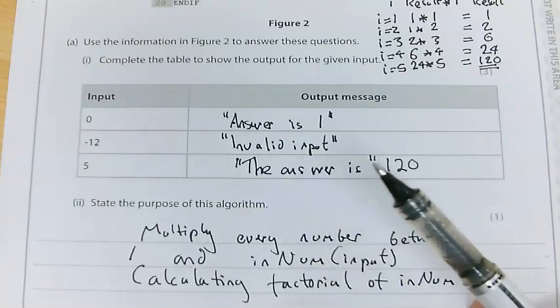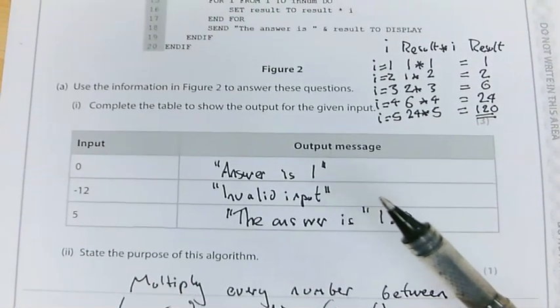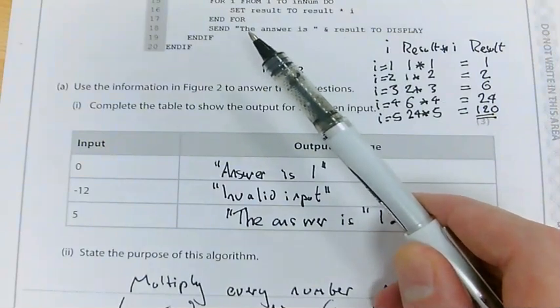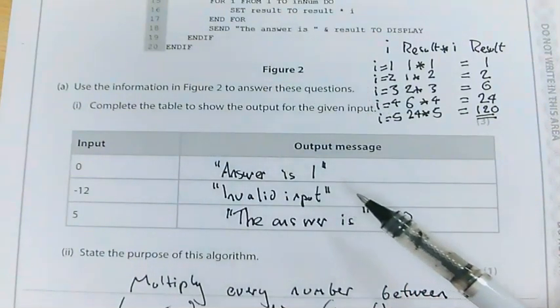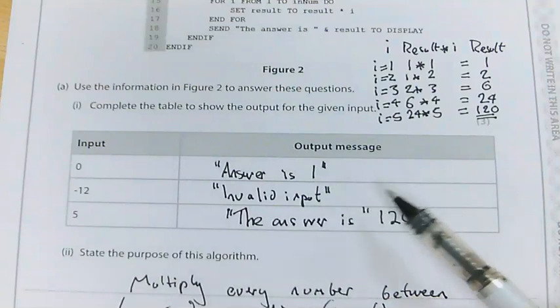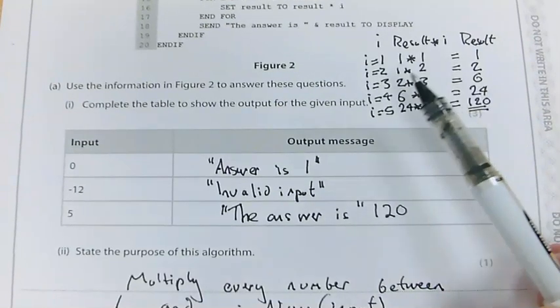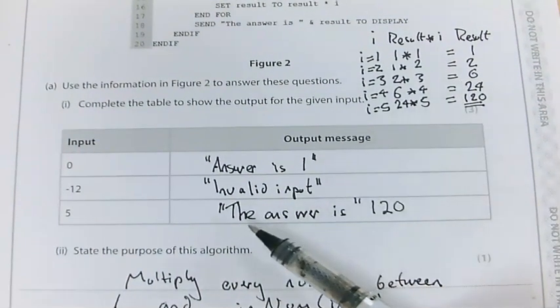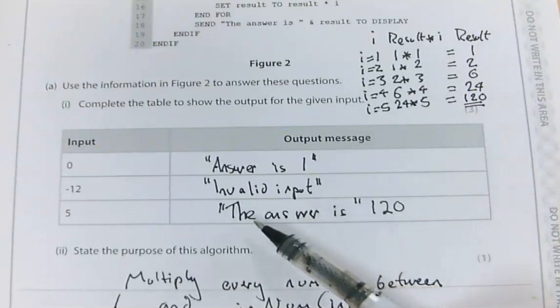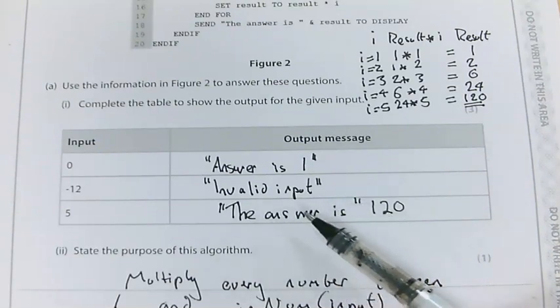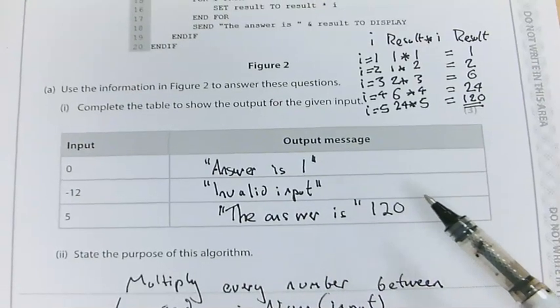And also, just another little tip there. If I just move that back up. It does specifically say for the output the answer is. So you don't just write down 120. You need to write the answer is 120. Because you don't want to lose that mark if you spend all that time doing these calculations there, to lose it by not doing the correct output there. So the correct output is the answer is 120.